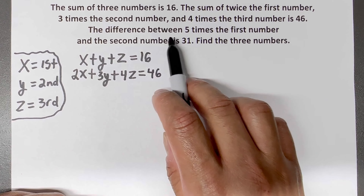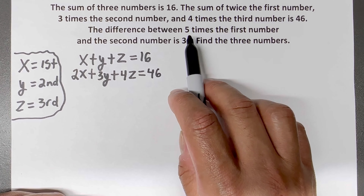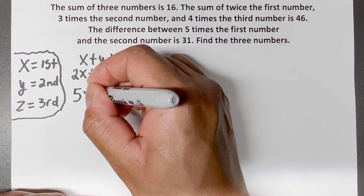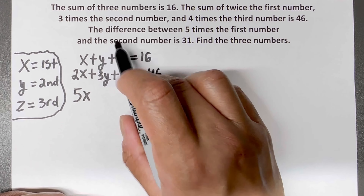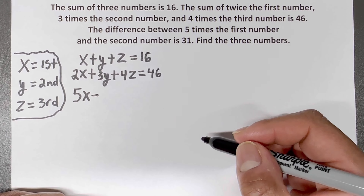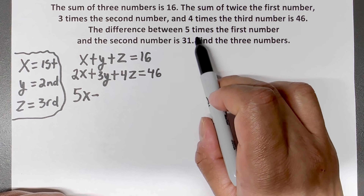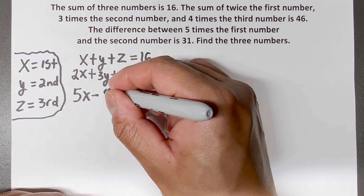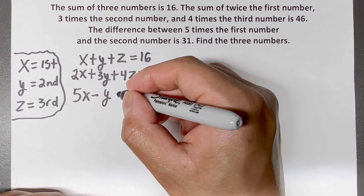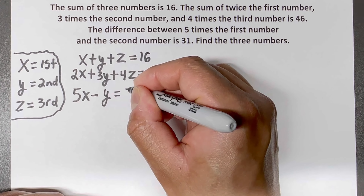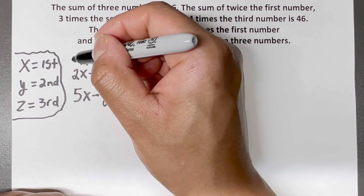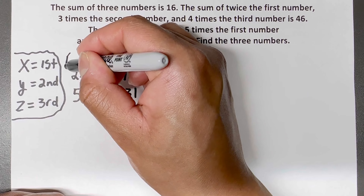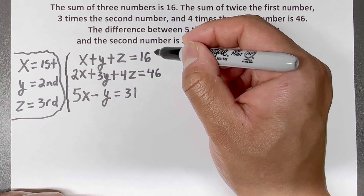The third line says the difference between five times the first number — so 5x — and the second number. 'Difference' means subtraction, so five times the first number minus the second number, y, equals 31. Now we have our systems of equations.